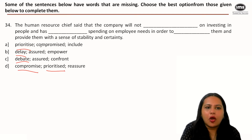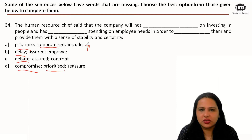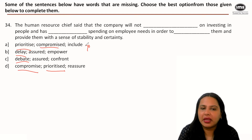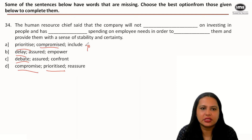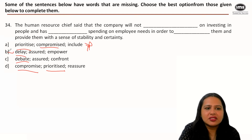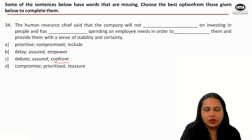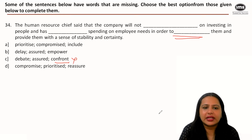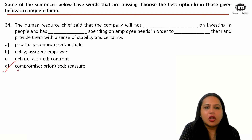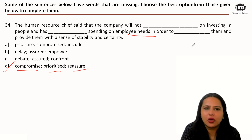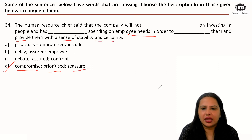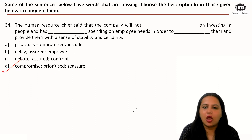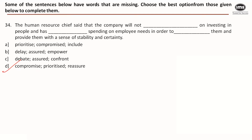If a company wants to make employees feel secure, it would 'not compromise' on spending. Compromising on spending is negative and contradicts providing stability, so option A is out. 'Delay' in option B doesn't make sense in context. For the third blank, 'confront' is negative and is eliminated. The correct answer is option D: the company will not compromise on investing in people, has prioritized spending on employee needs, in order to reassure them and provide stability and certainty.